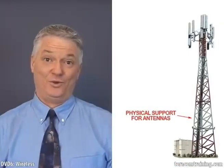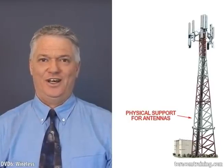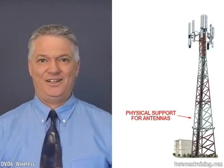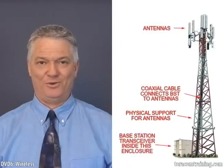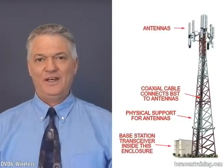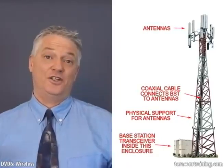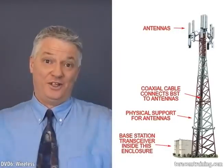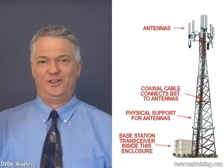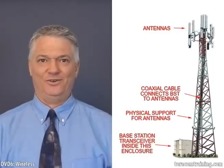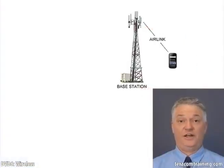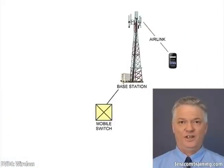The third component of the base station is the physical support for the antennas. In the first generation, we had pretty big cells and antennas had to be high off the ground, so there were big ugly towers as support. In the second and subsequent generations, we lowered the power and made the cells smaller, meaning the antennas could be closer to the ground — on top of a building or a water tower.